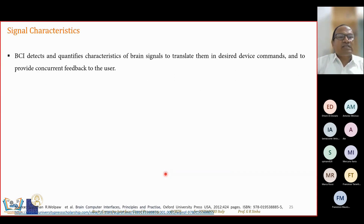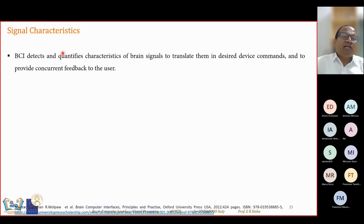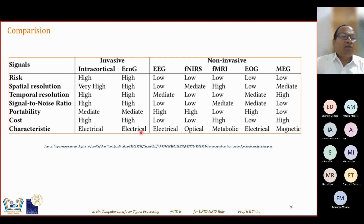BCI is used to detect and quantify characteristics of BCI signals. From the signals we identify characteristics which are translated into device commands and concurrent feedback. These characteristics include signal features. Feature extraction is important so that we can obtain characteristics representing meaningful information for either human or computer interpretation.